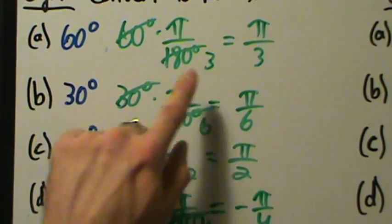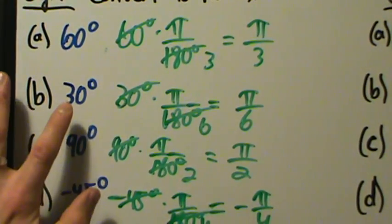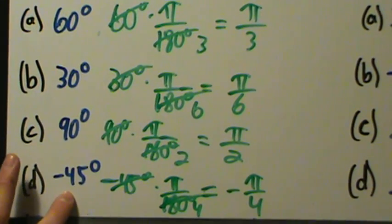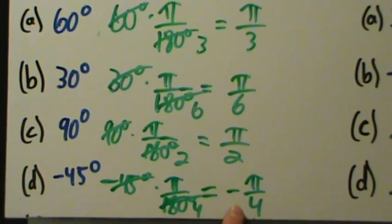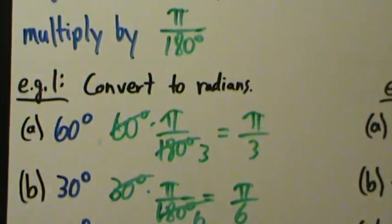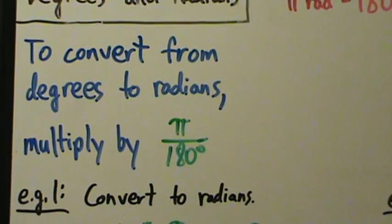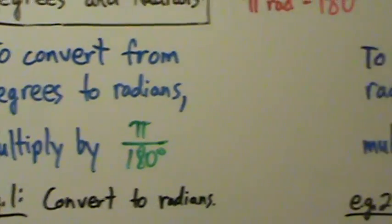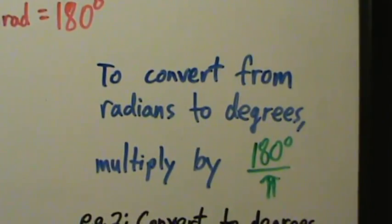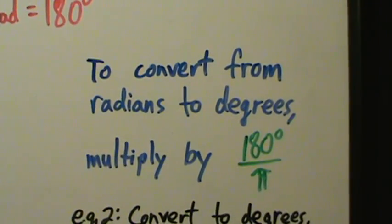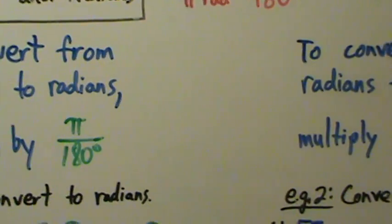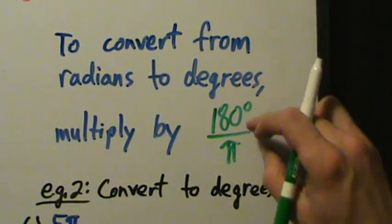So to summarize: 60 degrees is pi over 3 radians, 30 degrees is pi over 6 radians, 90 degrees is pi over 2 radians, and negative 45 degrees is negative pi over 4 radians. That's converting from degrees to radians — you multiply by pi over 180 degrees. Now if we want to go the other way, converting from radians to degrees, we multiply by the reciprocal, which is 180 degrees over pi.